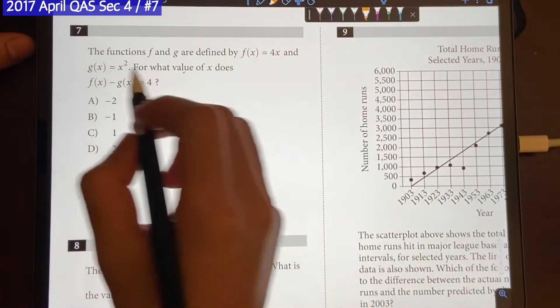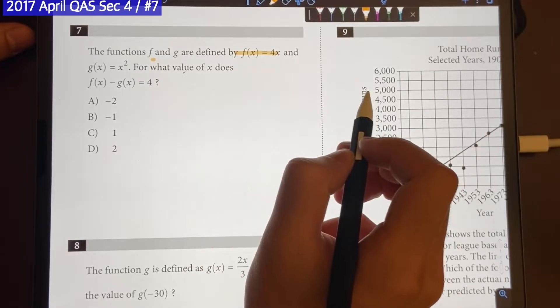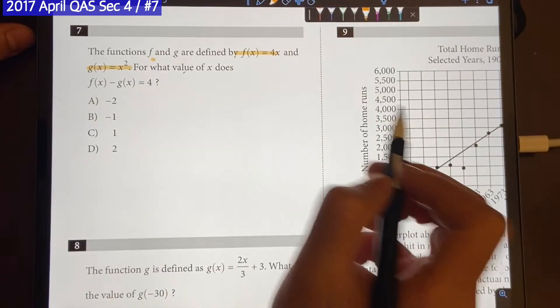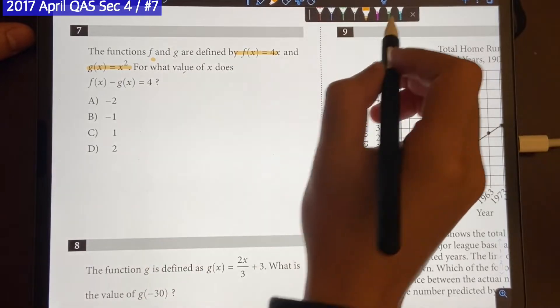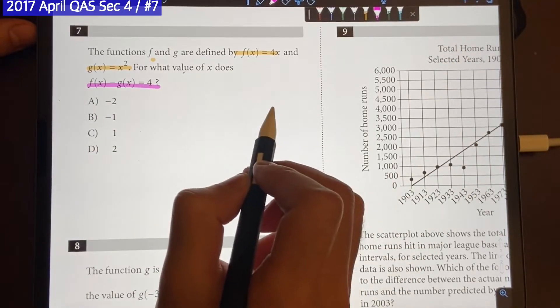So the question says, the function f and g are defined by f of x is equal to 4x and g of x is equal to that. So for what value of x does f of x minus g of x equal to 4?